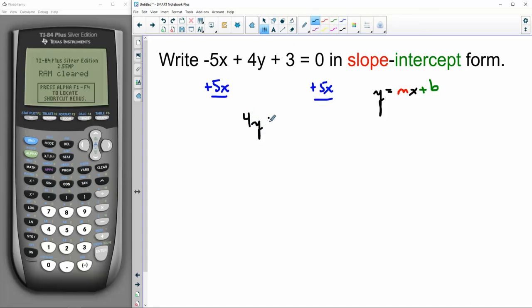And then I'm going to subtract 3 from this side and from this side. That'll give me 4y equals 5x minus 3.